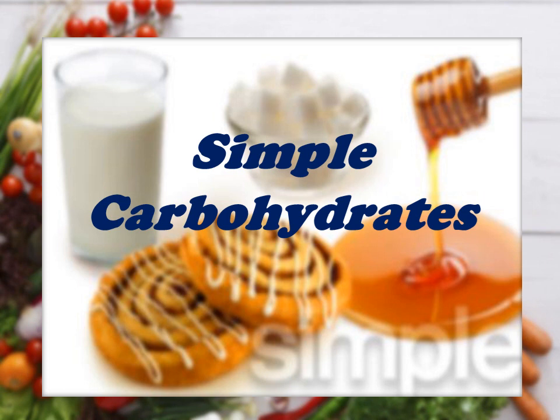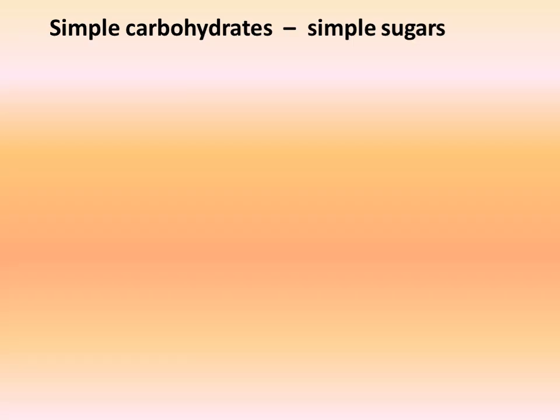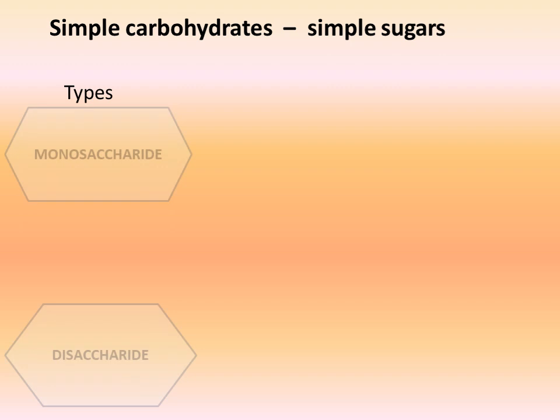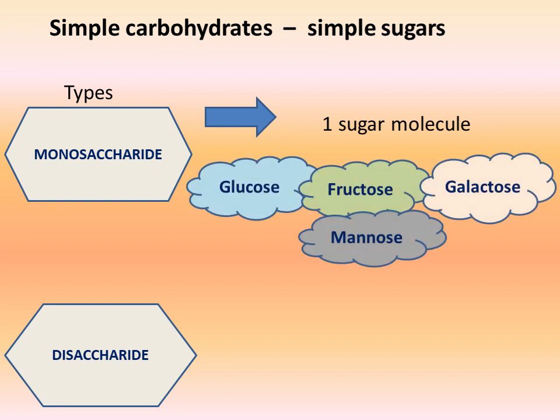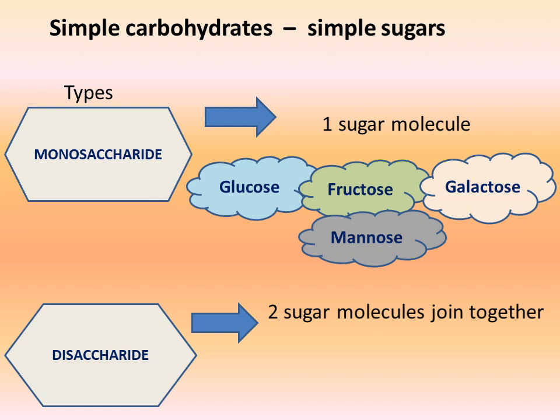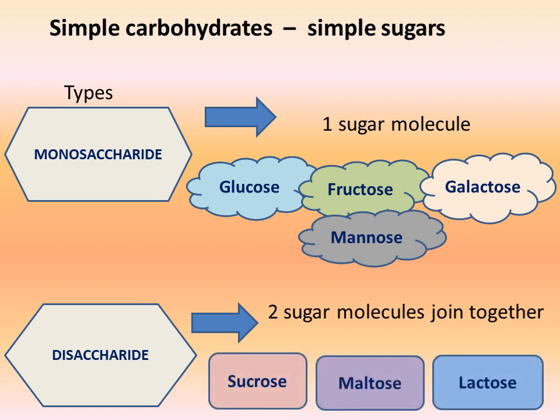In the previous video, we have seen the classification of carbohydrates that include simple and complex carbohydrates and their examples. Simple carbohydrates are simple sugars. They can be either monosaccharides or disaccharides. Monosaccharides are made up of one sugar molecule and they are glucose, fructose, mannose and galactose. Two monosaccharides join together to form disaccharides which includes sucrose, maltose and lactose.